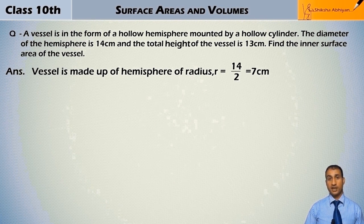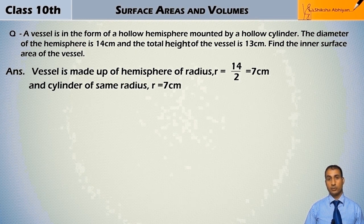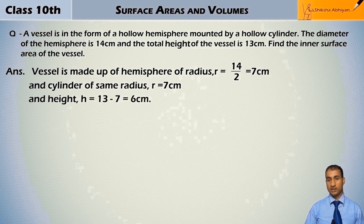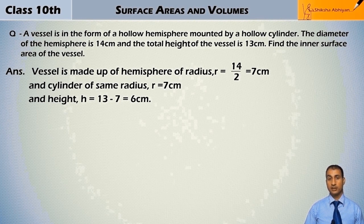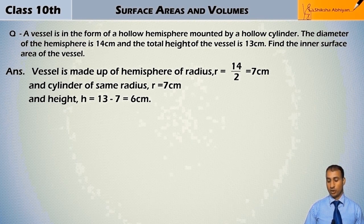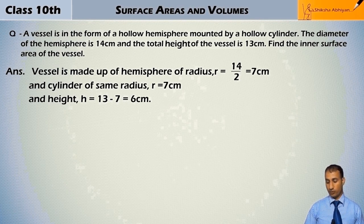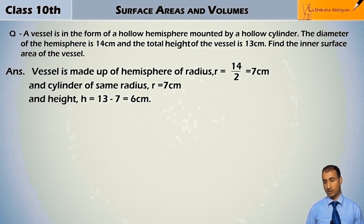The diameter is also 14 cm and radius is also 7 cm. Now its height will be how much? Total height is given as 13 cm. From 13, we subtract 7 because that 7 is already in the hemisphere. That equals 6 cm.